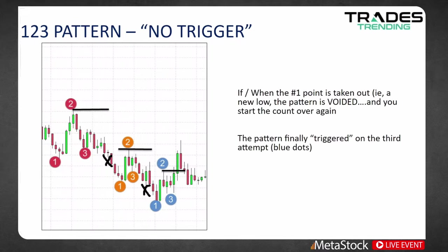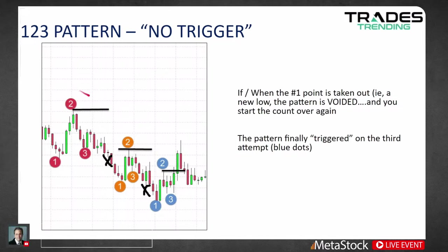This is what I call a no-trigger or voided trade. It is what it is — neither good, bad, nor ugly. Here we have a 1-2-3 bottom looking to get long. The market trades lower, takes out the number 1 low. We set up a new 1-2-3 bottom looking to take out the number 2 to get long — takes out that number 1 low again. We start to count over. 1-2-3. Finally able to get long on this third attempt. What I like about these situations is when we have lower price, lower price, lower price — we're also likely to have some type of divergence going on. An oscillator such as MACD, RSI, or stochastics is making higher lows when price is making lower lows. That's divergence — a good piece of icing to add to this strategy.